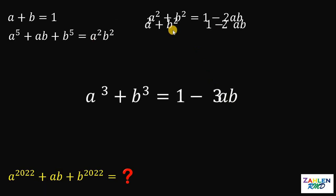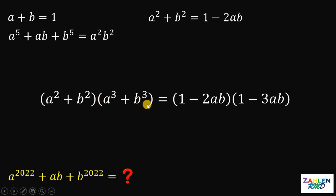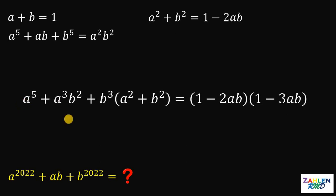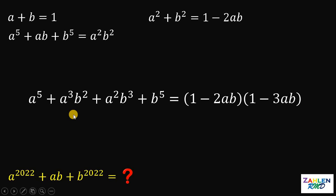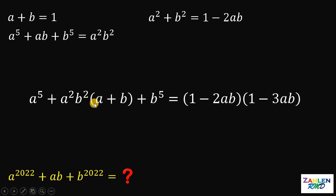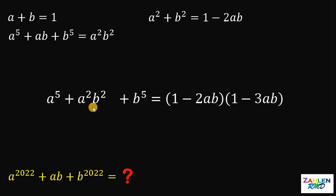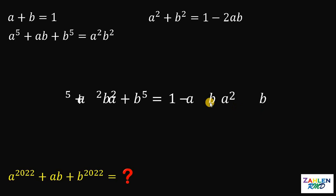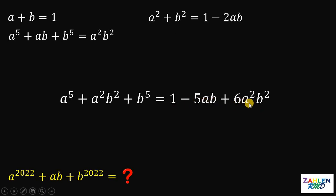Now, if we multiply the two equations — a squared plus b squared times a cubed plus b cubed equals (1 minus 2ab)(1 minus 3ab) — this will give us a raised to the fifth power plus b raised to the fifth power. Using chunk multiplication on the left side, the middle terms share a common factor of a squared b squared. Since a plus b equals 1, that middle term becomes a squared b squared. On the right-hand side, 1 minus 2ab times 1 minus 3ab gives us 1 minus 5ab plus 6a squared b squared.